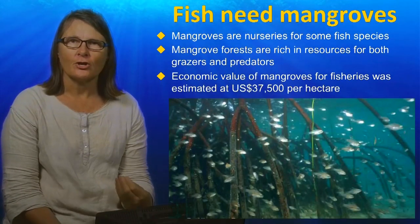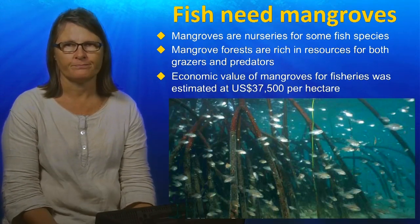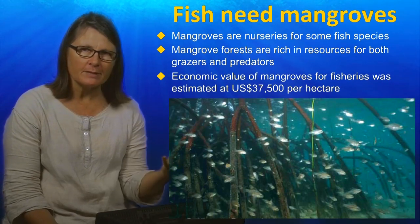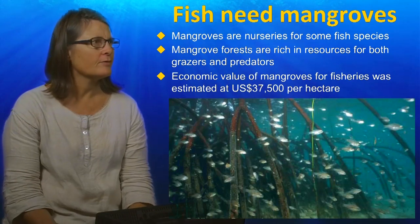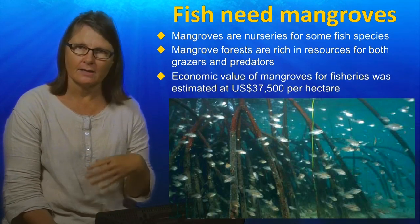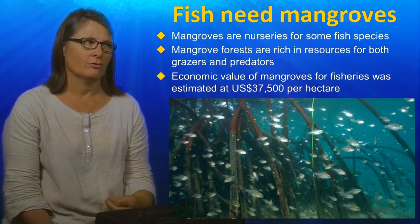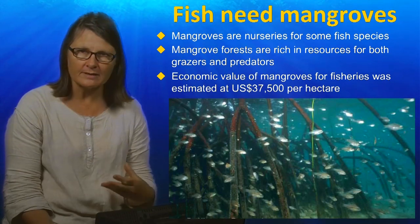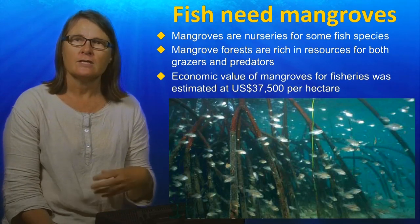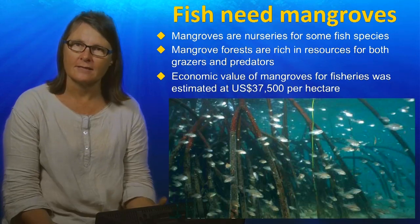In addition to coastal protection, mangroves are incredibly important for fisheries production. Mangroves are nurseries for some fish species — some species spend their juvenile phases in the mangroves. They're really rich resources for grazers and predators who might come into the mangroves with every tidal cycle. The economic value of mangroves for fisheries was estimated to be around US $37,500 per hectare, making this an incredibly important resource for sustainable fisheries.